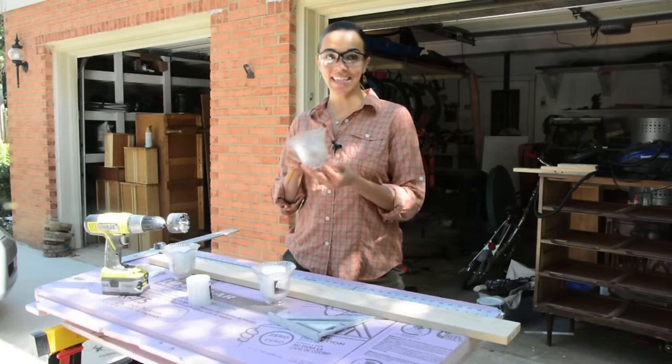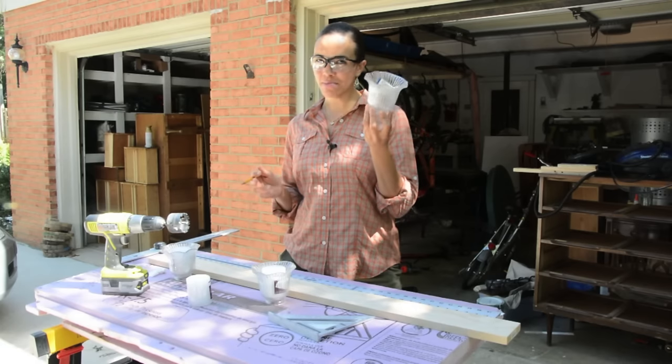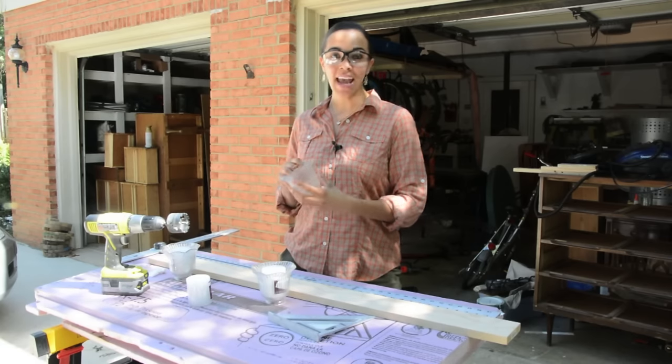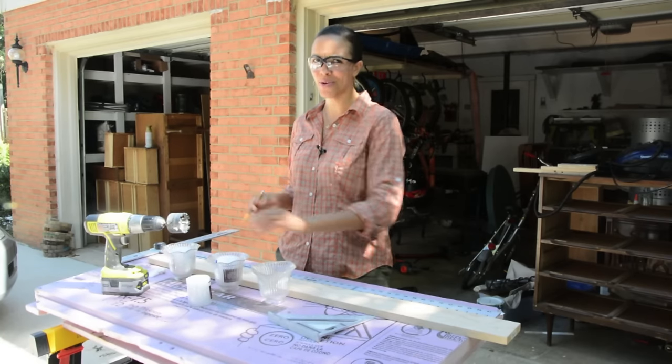So today we are upcycling ceiling fan lights. Yes, you know those ugly things from like the 1980s, 1970s? Well, we're gonna make them look pretty and we're gonna use some wood and turn them into candle holders. Stick with me because I'm gonna show you how to do this. It's really easy. It's like 30 minutes.